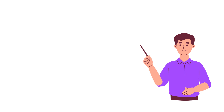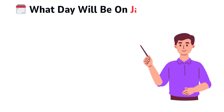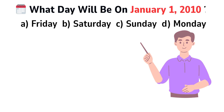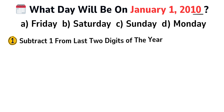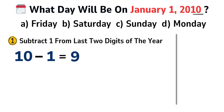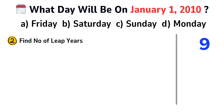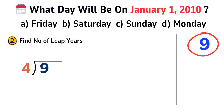Let's take the first example. What day was January 1st, 2010? Step 1: Take the last two digits of the year and subtract one. So 10 minus 1 equals 9. Step 2: Find how many leap years are in that number — simply divide by 4 using integer division. 9 divided by 4 equals 2. Write 2 here.